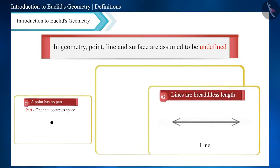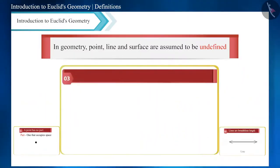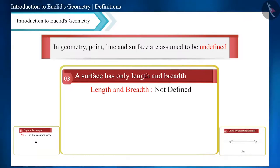Similarly, according to this definition of Euclid, a surface is one that has only length and breadth. Is it actually possible to have a surface that has only length and breadth?